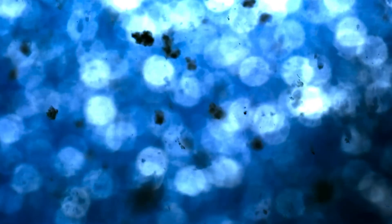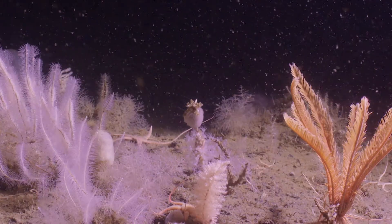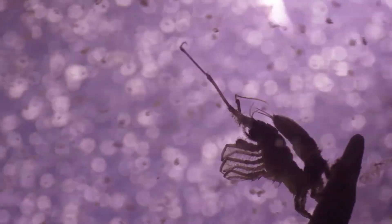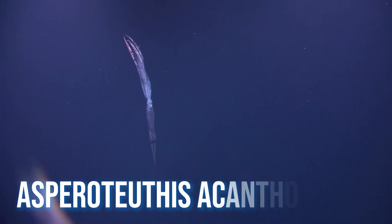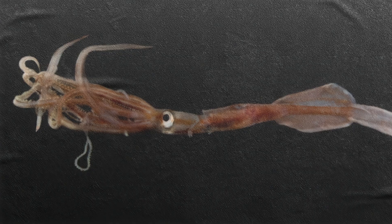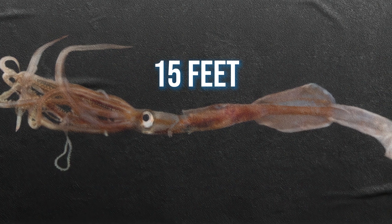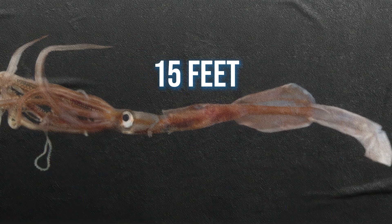No plants, no sunlight, only marine snow, the slow, endless rain of dead plankton and organic dust drifting down like the ashes of the ocean. Among the few survivors is Asperoteuthis acanthoderma, a delicate squid over 15 feet long with a body so thin and translucent, it looks like a floating ribbon of glass.